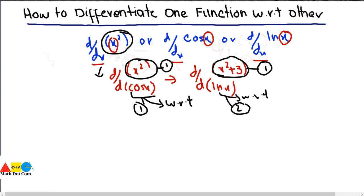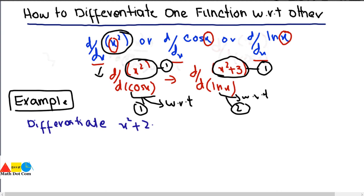I'll take the simplest example first, then we will move towards the complex ones. If I ask you to differentiate x² + 2x with respect to x⁴, we have two functions here: function number one is x² + 2x and function number two is x⁴. Here comes the concept of the chain rule — we have to use chain rule when differentiating one function with respect to the other.